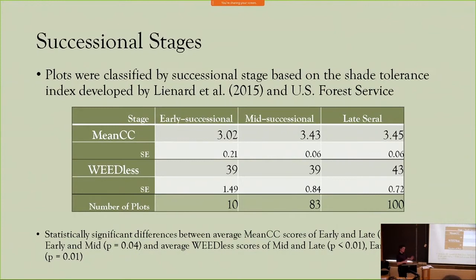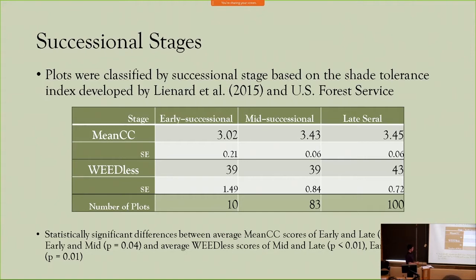To provide a finer scope of analysis, plots were classified by successional stage based on the shade tolerance capacity of their plants. Ten plots were in the early successional stage, 83 in mid-successional, and 100 in the later successional stage. The literature suggests that as forests increase in successional stage, so too does floristic quality, and you can see that general trend. However, the difference between mid-successional and late seral plots was quite marginal and not statistically significant. In the weedless category, late seral plots have a significantly higher score than the other two in terms of non-native species composition.